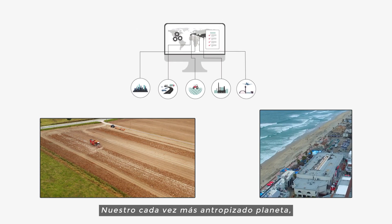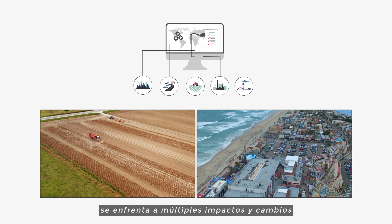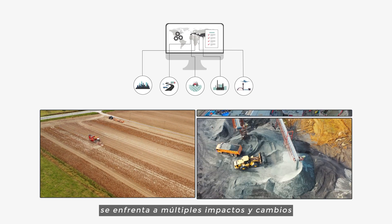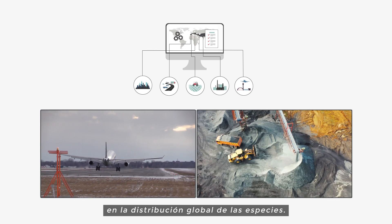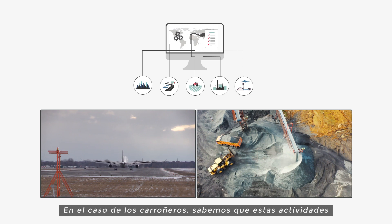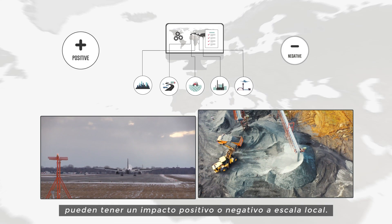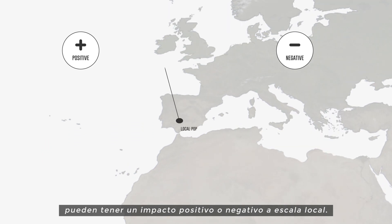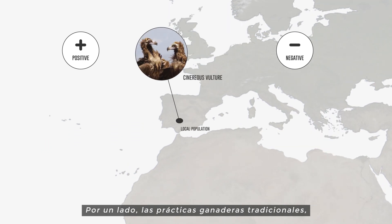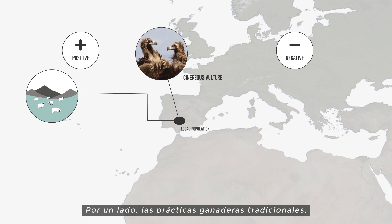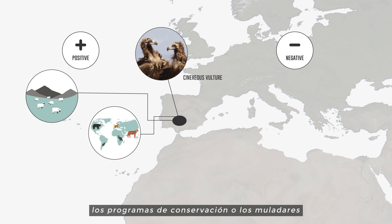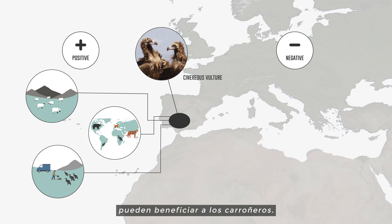Our increasingly humanized world is facing multiple changes and impacts on species distribution globally. In the case of scavengers, we know that these activities may have positive and negative impacts at a local scale. On the one hand, traditional livestock farming practices, conservation programs, or feeding stations may benefit scavengers.